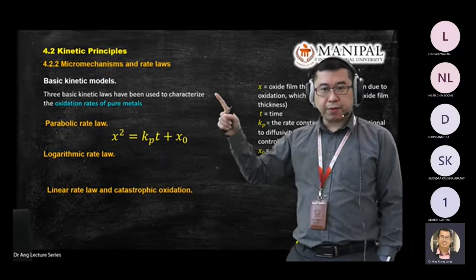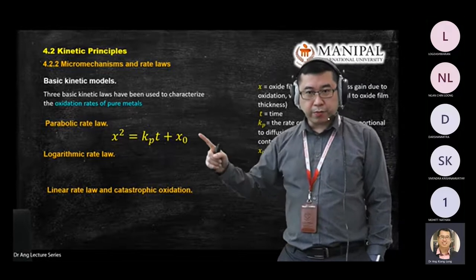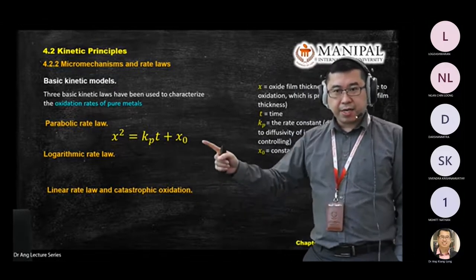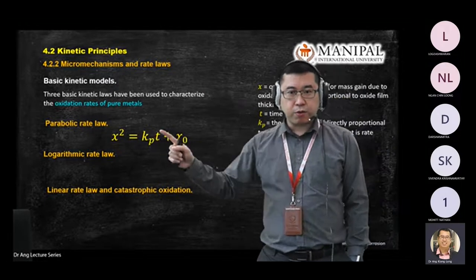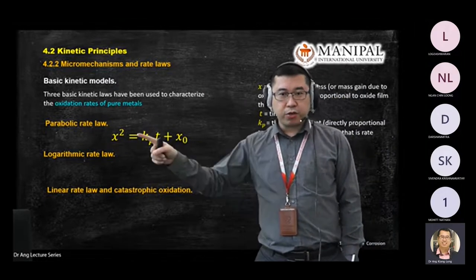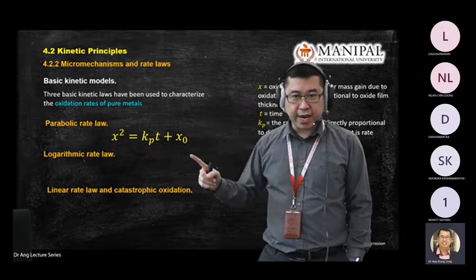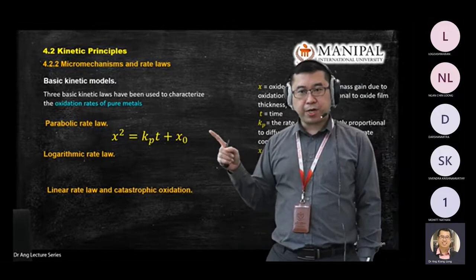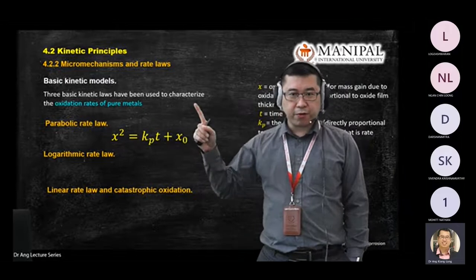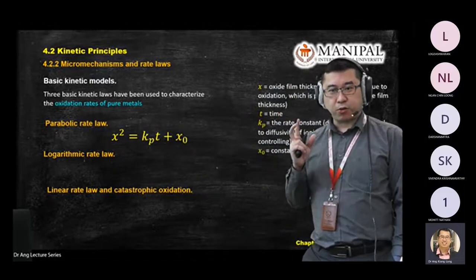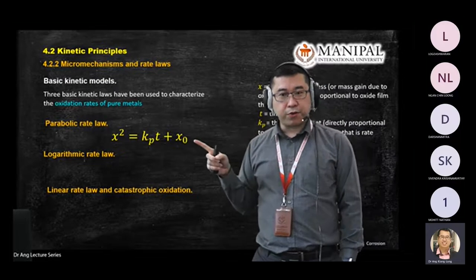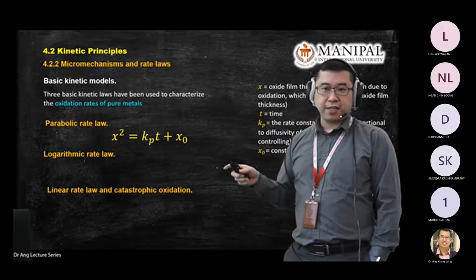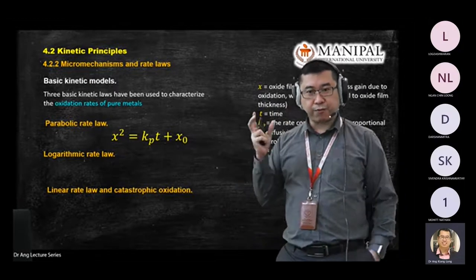From the experiment, from the graph, you measure the thickness squared and plot it on the y-axis, and time on the x-axis, and you get a straight line. Of course, if you do not plot x squared but plot x on the y-axis, you get a parabolic shape. You can change your graph from parabolic to linear by changing the y-axis to x squared. This is just a conversion — presenting an equation in graph form.